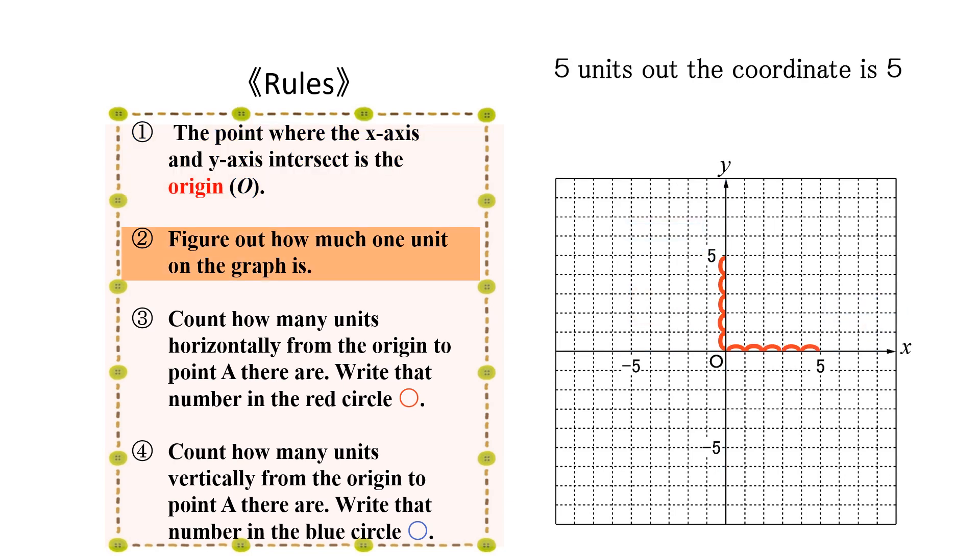Next, let's see how much one unit on the graph is. In this case, from where the number five is marked on the graph, we can see that each unit on the graph is one.